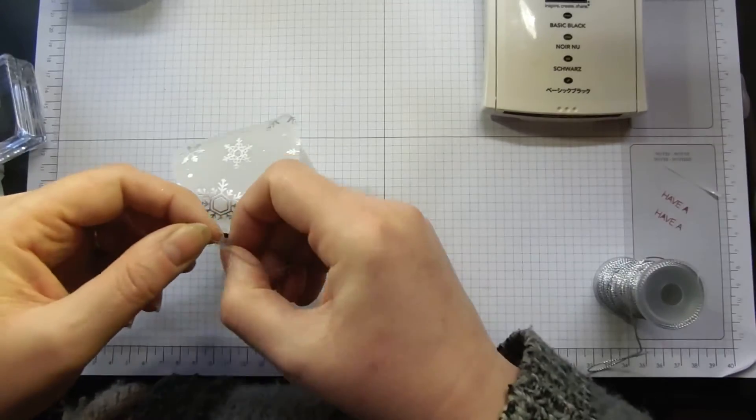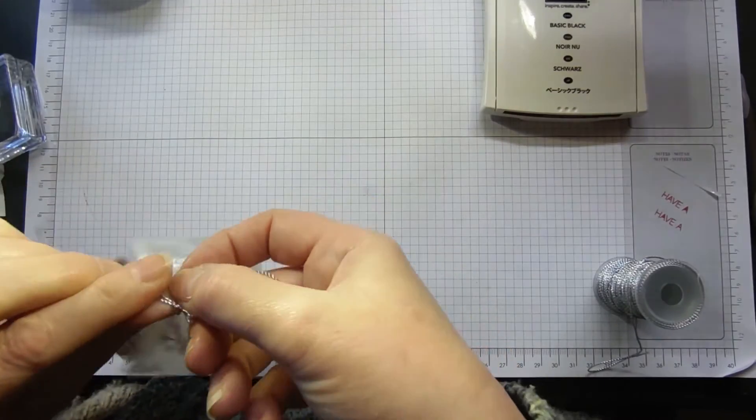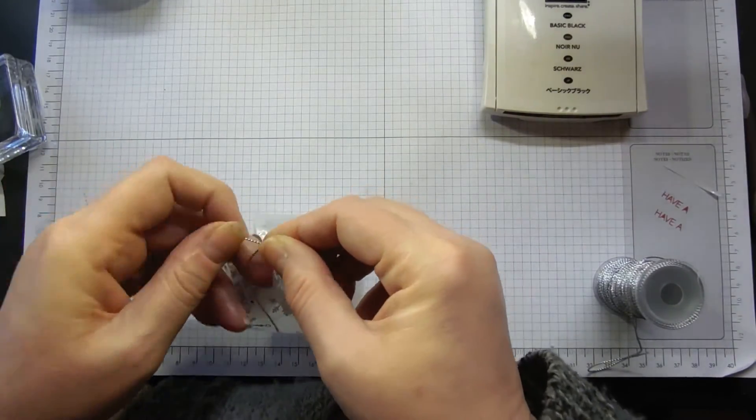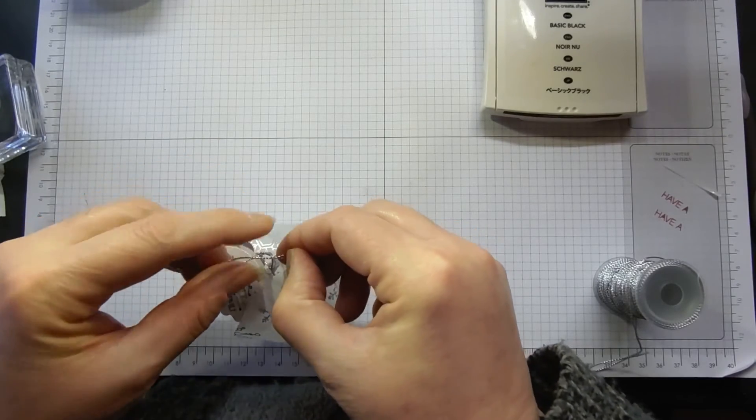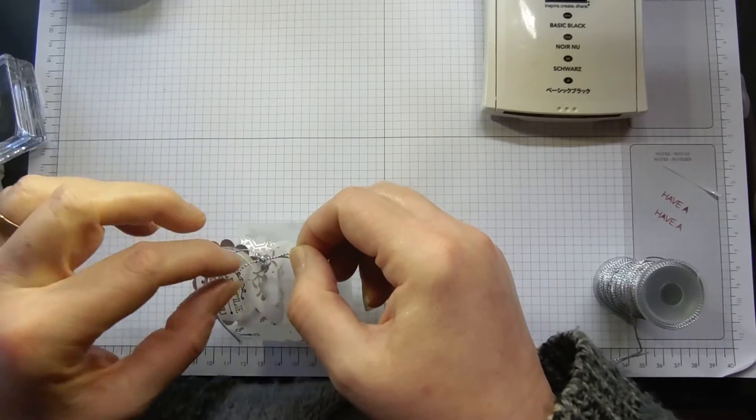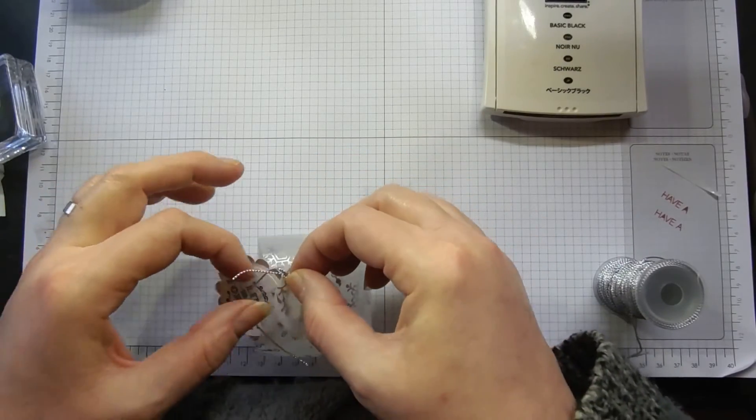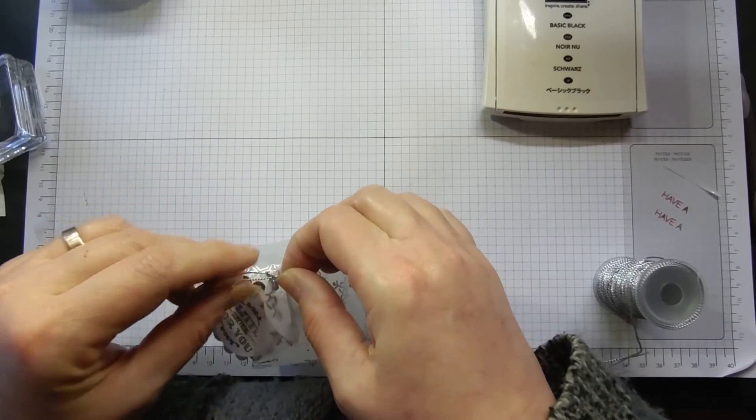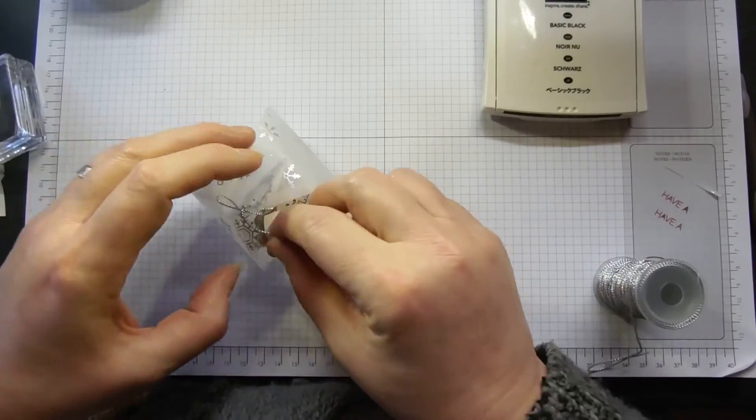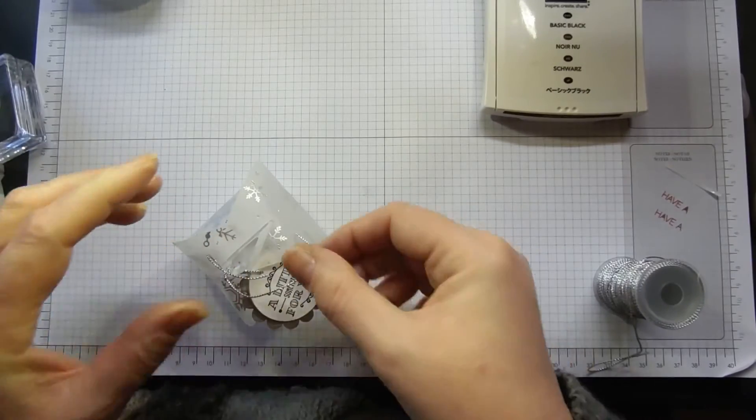Doesn't want to go around. I'm not going to do it as a complete bow. Then you have a little bit of the cording trim and you can just coil that.